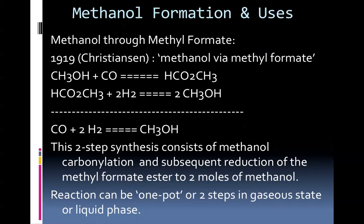Methanol formation through the methyl formate ester has been known as recently as 1919. Christensen reported the following process: one mole of methanol and one mole of carbon monoxide was found to yield an equivalent of methyl formate ester. That methyl formate ester, in a separate reaction, can be hydrogenated with two moles of hydrogen to yield two moles of methanol, therefore a net gain of one mole of methanol. The net equation is carbon monoxide and two moles of hydrogen converted into one mole of methanol.